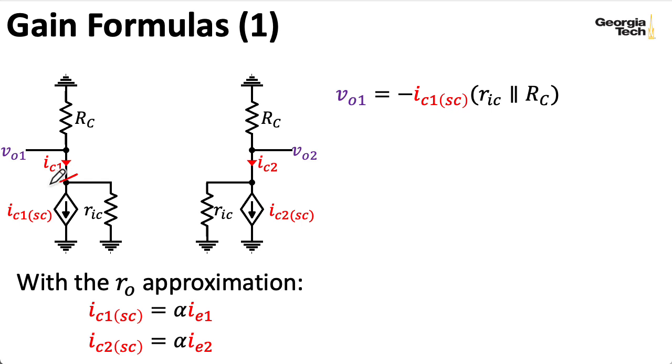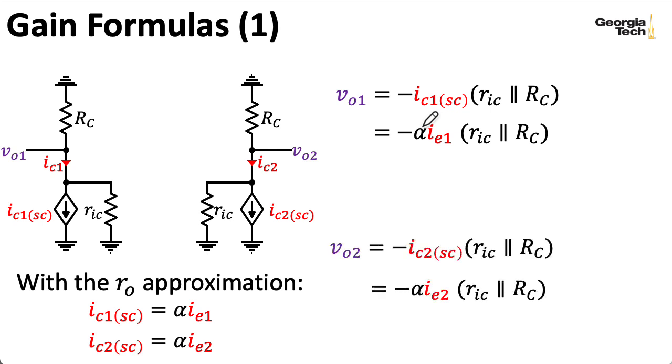So substituting alpha IE1 in for IC1 SC, I wind up with this expression here, and I have a similar expression for the output on the right.